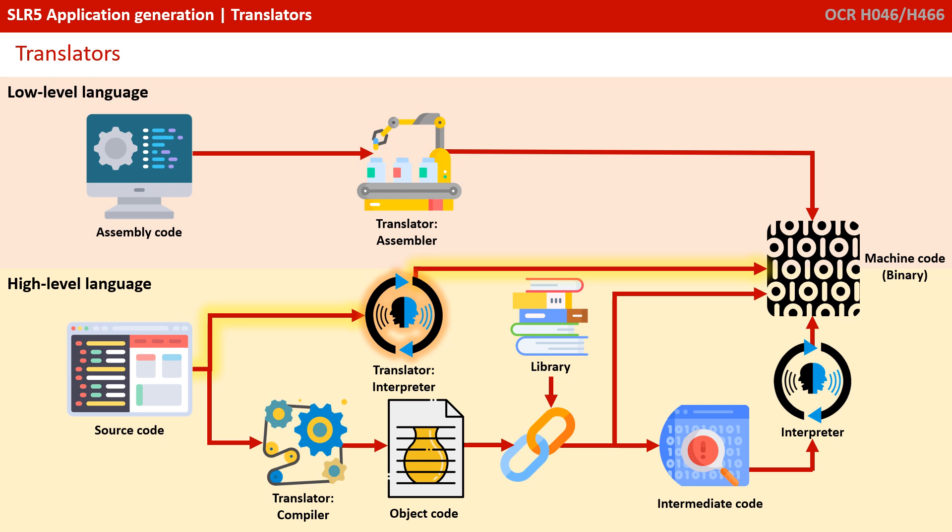High-level languages can be translated in one of two ways. They can be interpreted, which is currently being shown here. An interpreter takes one line of source code, translates it, and then executes it. It's quite a straightforward process.